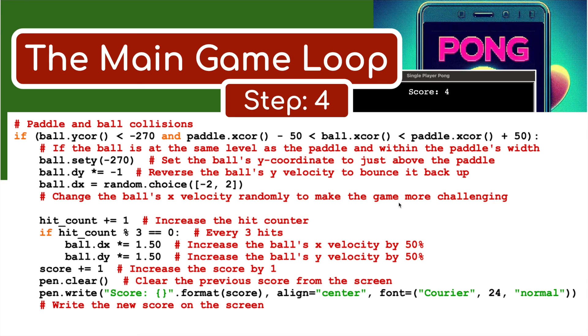In terms of scoring, we increase the score by one. But this is what I was talking about before - this is where we can increase the difficulty. So every three hits, every time we hit the ball three times, it's going to increase the ball's velocity by 50%. So it's going to speed up. It's going to double in speed and get faster and faster and faster.